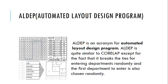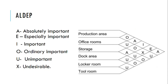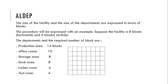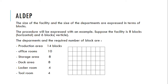There are six inputs required for ALDEP: length and width of the facility, area of each department, minimum closeness preference, sweep width, relationship showing the closeness rating, location and size of restricted areas. The size of the facility and all six departments are expressed in terms of blocks.